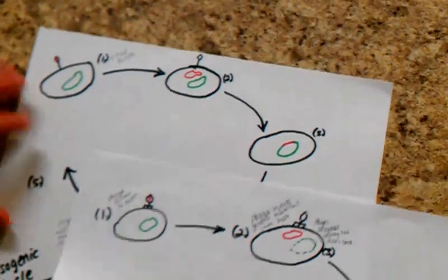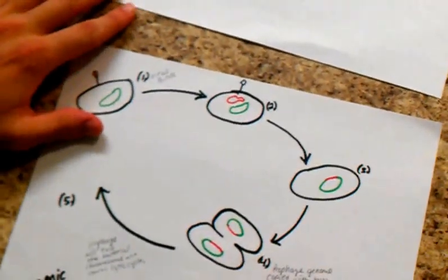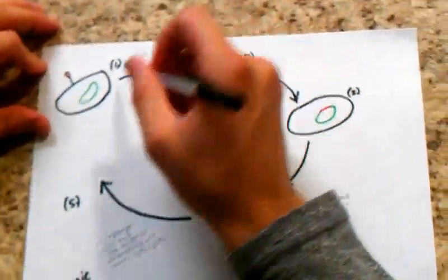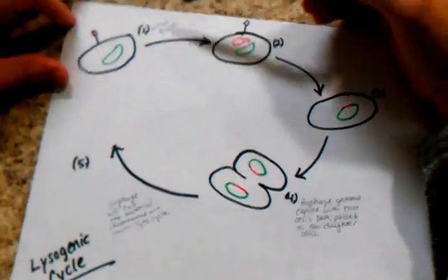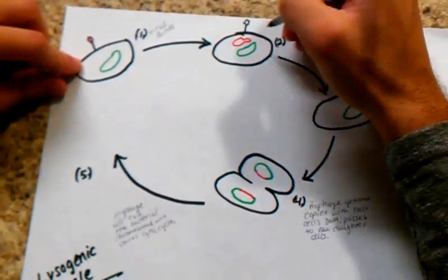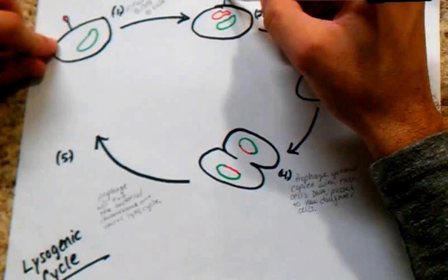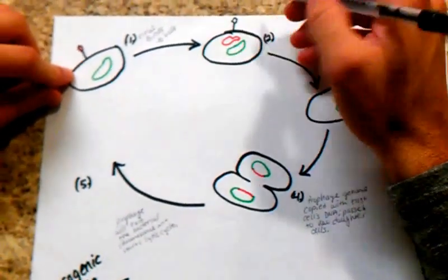Now, I'm going to be talking about the lysogenic cycle. In this case, kind of the same process, when the virus binds to the bacterial host. In the next step, its genetic material is also injected into the bacterial host.